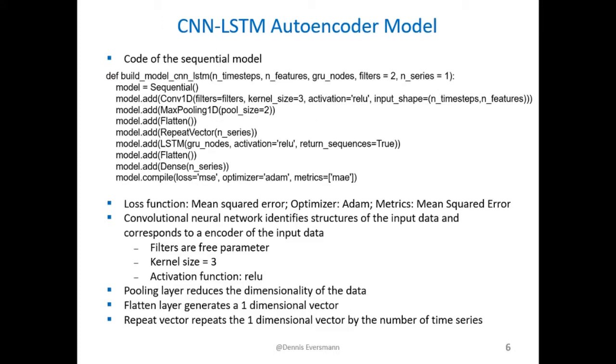The autoencoder model is a little bit more complex. Here for the first layer I choose a convolutional layer in order to identify structures in the time series. Followed by a max pooling layer which reduces the complexity of the data. Afterwards we have to flatten the outcome of the max pooling layer to a 1D time series vector. And repeat this flatten vector by the number of cells which are taken into account in the analysis. This repeated vector is now fed into an LSTM cell which is followed by a flattened vector and then put into a dense layer where the number of cells in the analysis defines the number of cells.